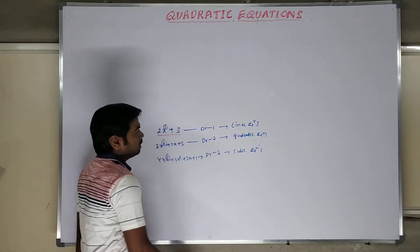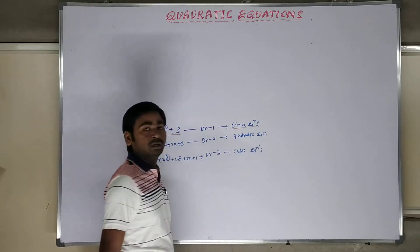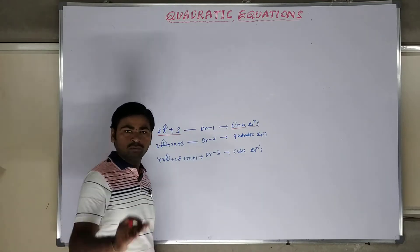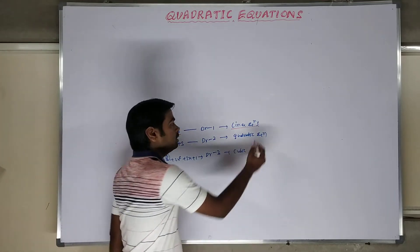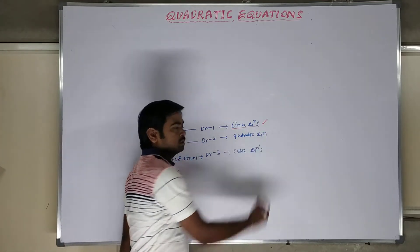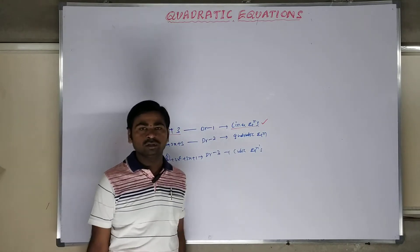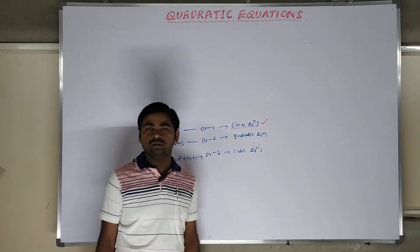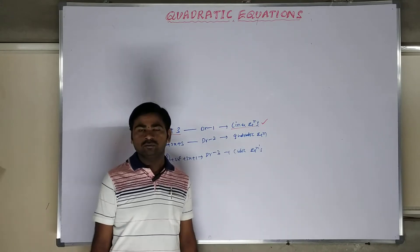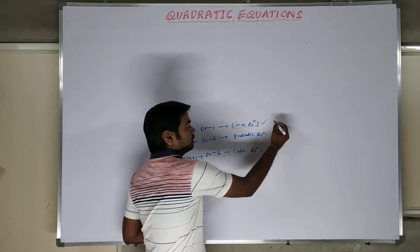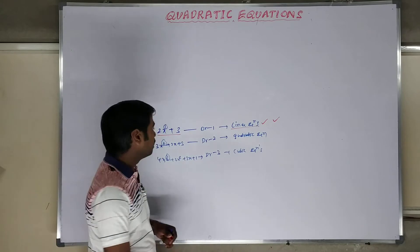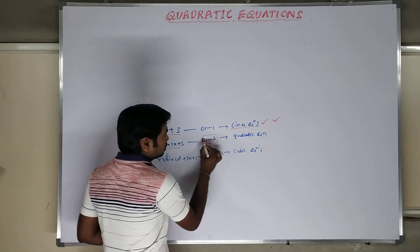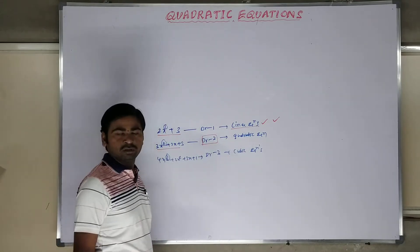When the order is 1, that equation is called a linear equation — that is already a previous chapter we have completed. Those who haven't watched, please watch the previous videos on linear equations — what they are and how to solve them, the different methods have already been explained. Now today, the degree of the equation is 2, that is nothing but a quadratic equation.